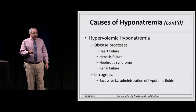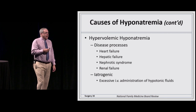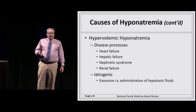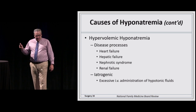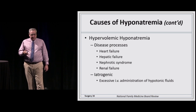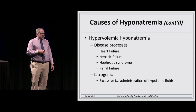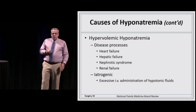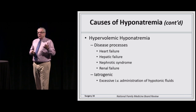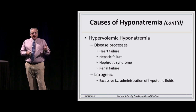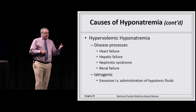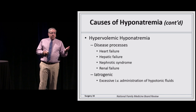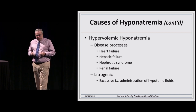Hypervolemic hyponatremia is usually dilutional — caused by congestive heart failure, renal failure, nephrotic syndrome, and hepatic failure. It can also result from giving too much hypotonic IV fluids; using solutions like one-third or half normal saline in high volumes can depress sodium to a clinically important level.